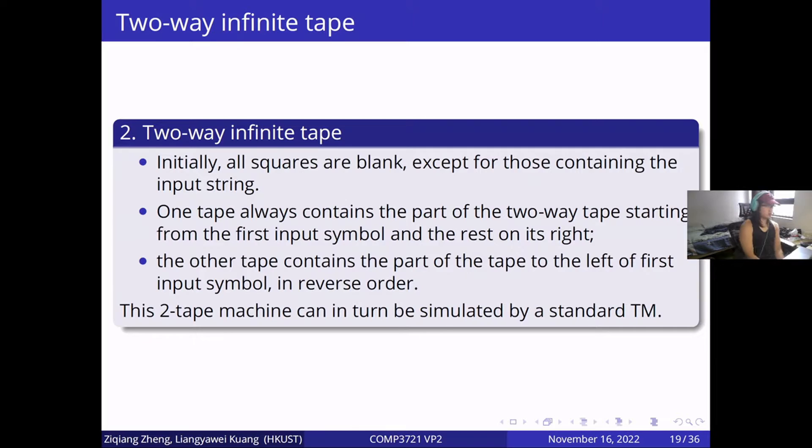Two-way infinite tape is different as one tape always contains the part of the two-way tape starting from the first input symbol and the rest on each thread. The other tape contains the part of the tape to the left of the first input symbol in reverse order. A standard Turing machine can simulate these two-tape machines.